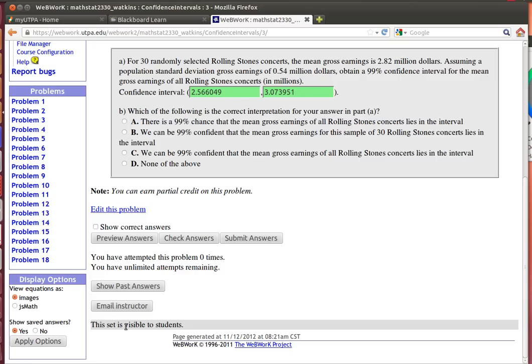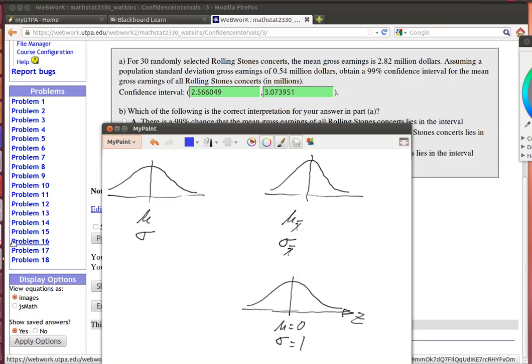Now here's the theory that we need to understand to work this problem. If we had a population that was normally distributed with a mean and a standard deviation, in our case we're saying that we know that the mean of this is $2.82 million.